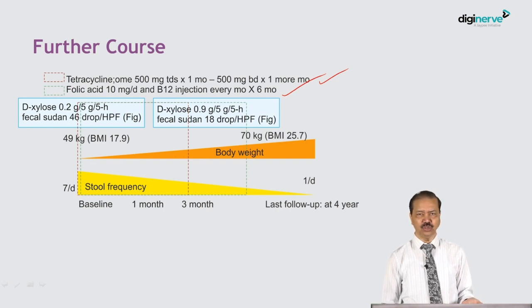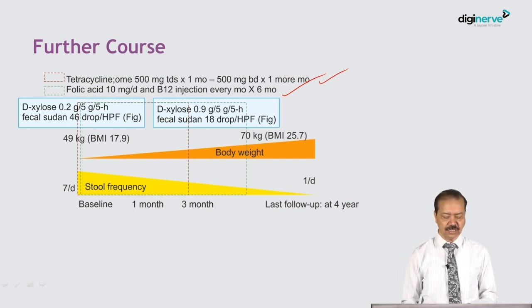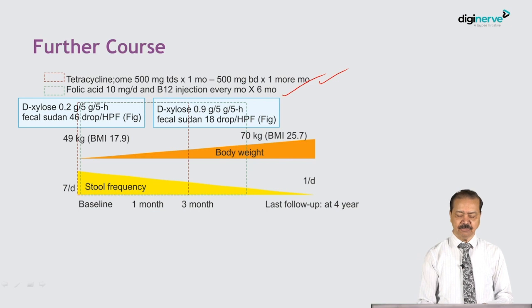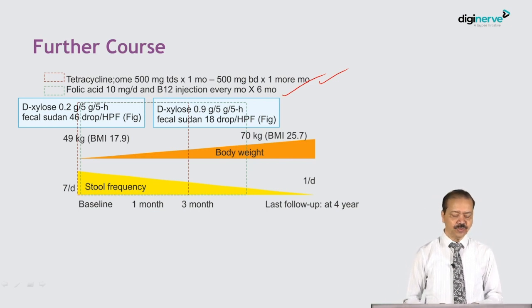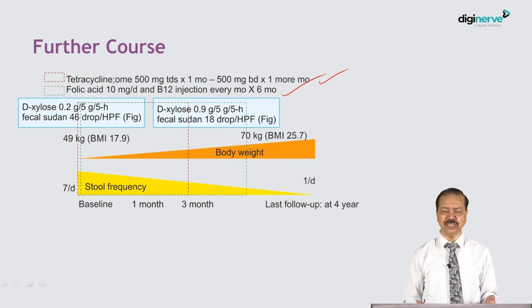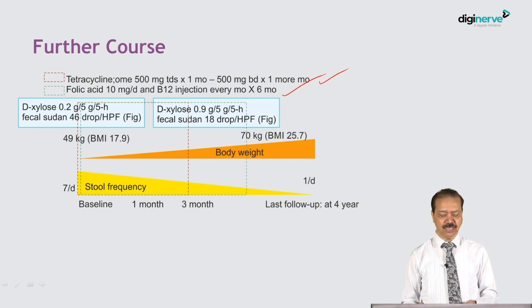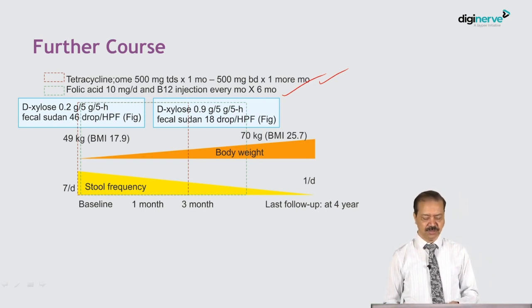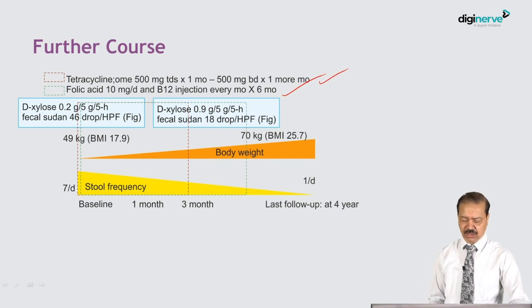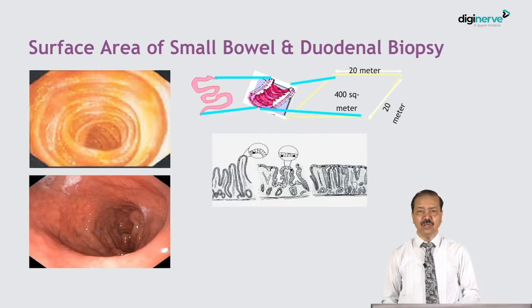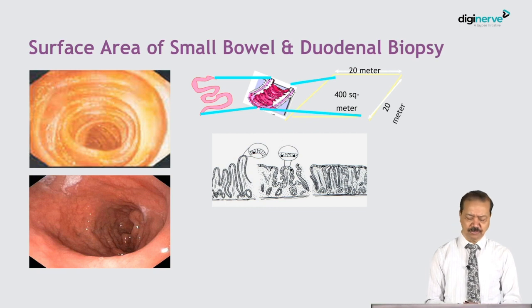His D-xylose and fecal fat also improved. Initial D-xylose was 0.28 g, which is grossly abnormal; it became 0.9 g, which is borderline normal. His fecal Sudan stain showed 46 fat droplets before treatment, which reduced to 18 droplets — a much significant reduction. So we confirmed this patient had tropical sprue.